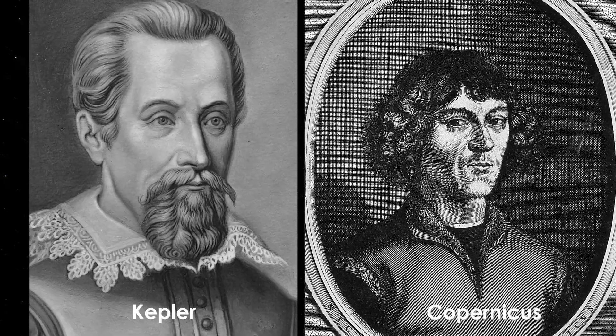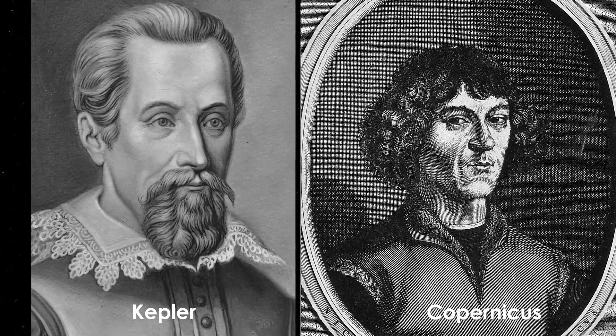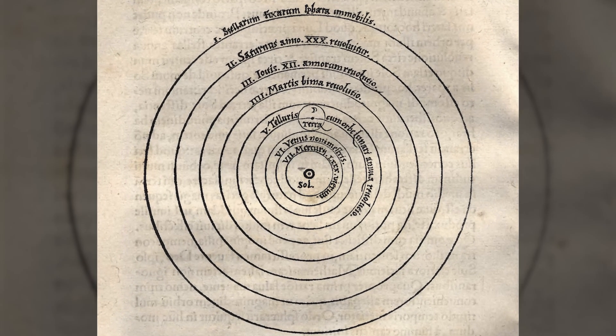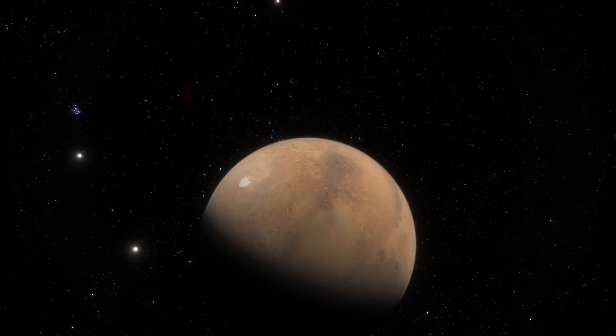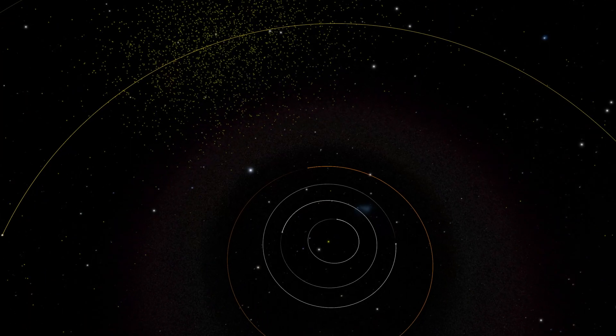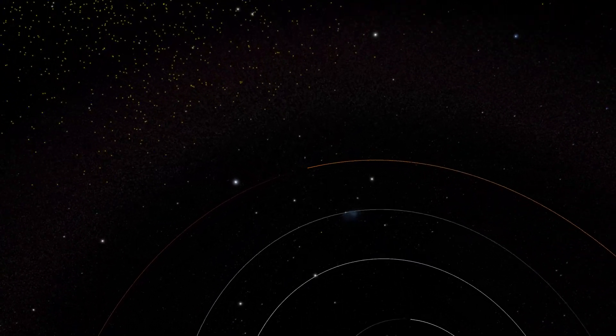However, Kepler firmly believed in Copernicus's heliocentric universe, which correctly placed the Sun at the center of the system. But regardless of where and how the Sun and Earth were positioned, neither geocentrism nor heliocentrism could accurately explain Mars' orbit.